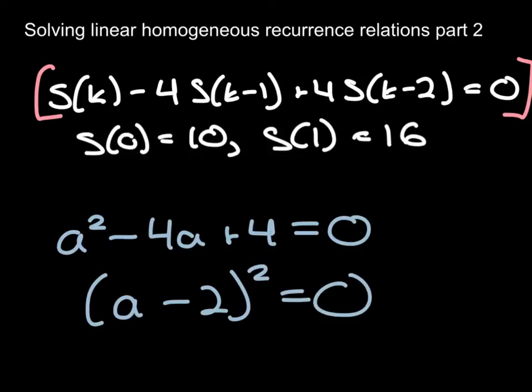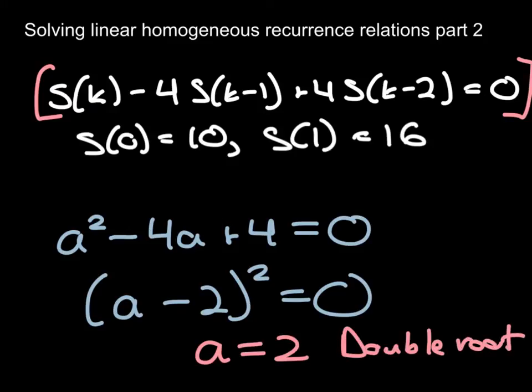So this has only one root here, namely a = 2, and it's what's called a double root or repeated root. This causes problems for us in the algorithm because if you remember from the algorithm in the previous video we really needed two roots to set up that framework for our solution. We only have one root, so what are we going to do?